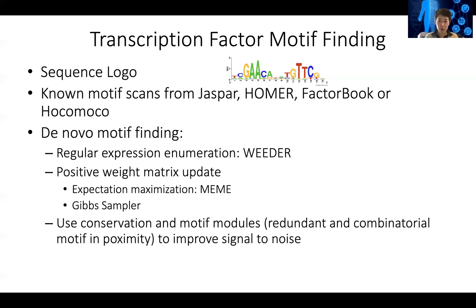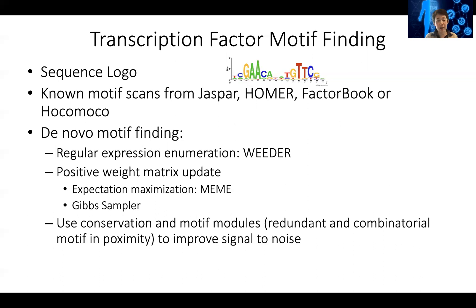In both approaches, there are two major parameters in the model: one is the motif probability matrix, similar to the sequence logo; the other is where the motif occurs in your input sequence — the location of the motif occurrence. Given one, you can get information for the other. But at the beginning we don't have information on either, so we randomly initialize the motif matrix and then use the input sequence to gradually update these parameters iteratively.